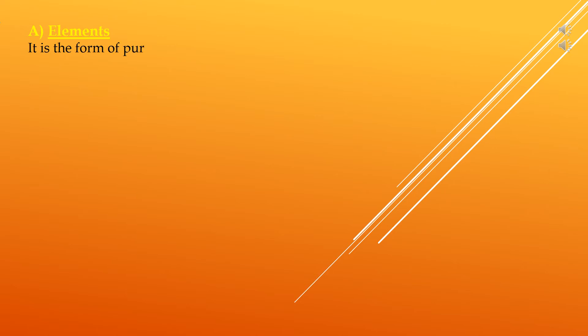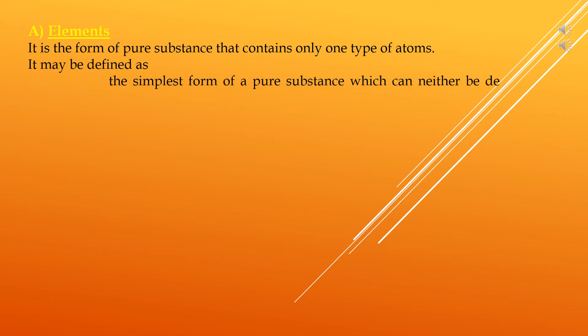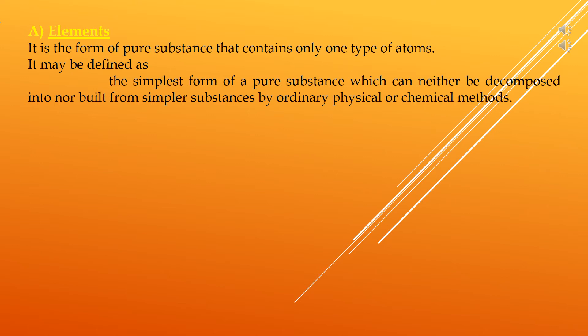Pure substances can be further classified into elements and compounds. An element is a form of pure substance that contains only one type of atom. It may be defined as the simplest form of a pure substance that can neither be decomposed into nor built from simpler substances by ordinary physical or chemical methods. Common examples of elements are hydrogen, oxygen, nitrogen, sulfur, and iron.